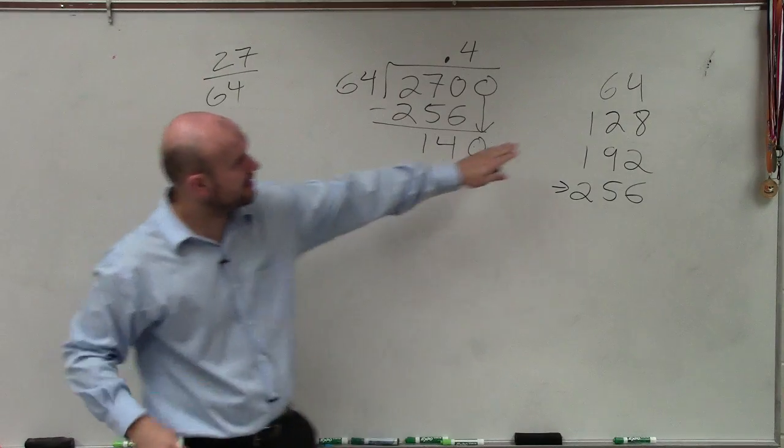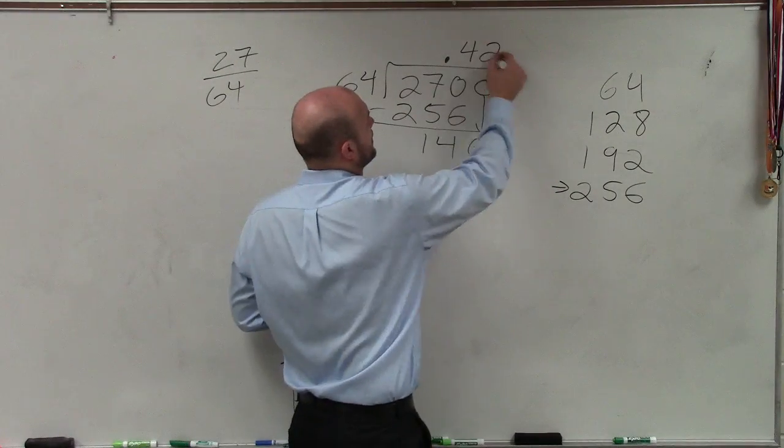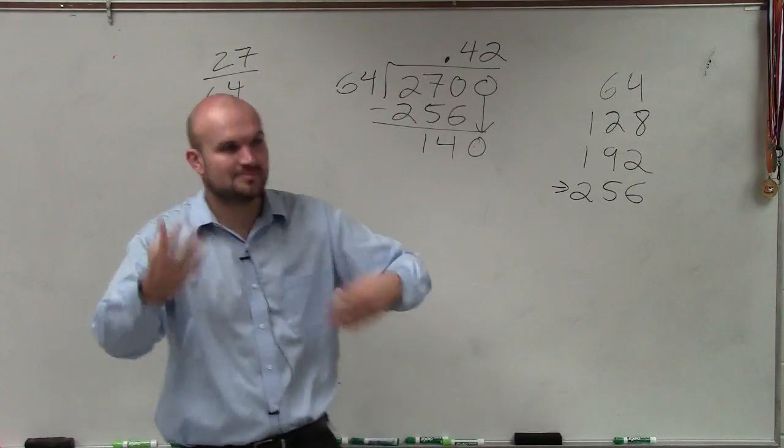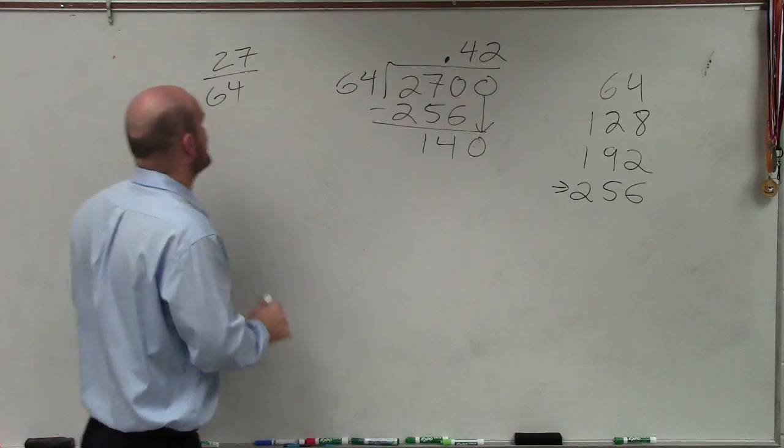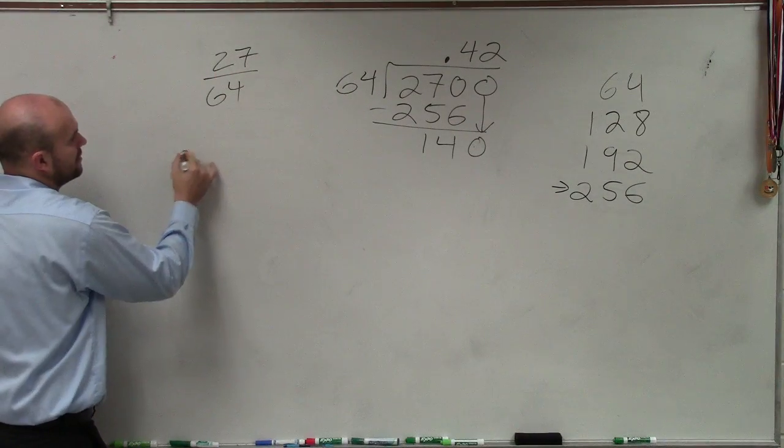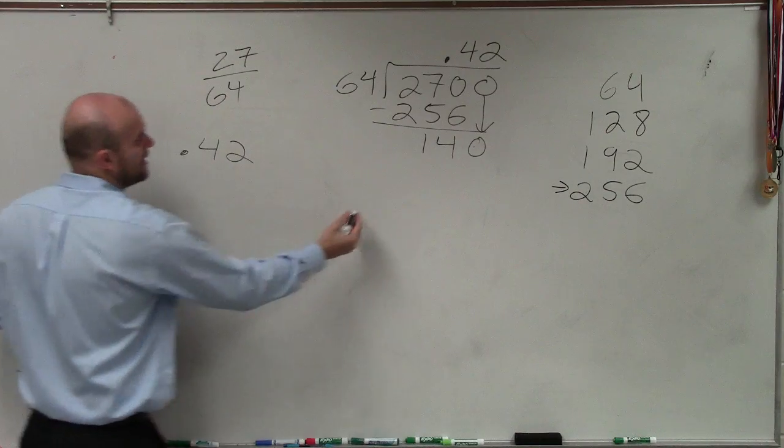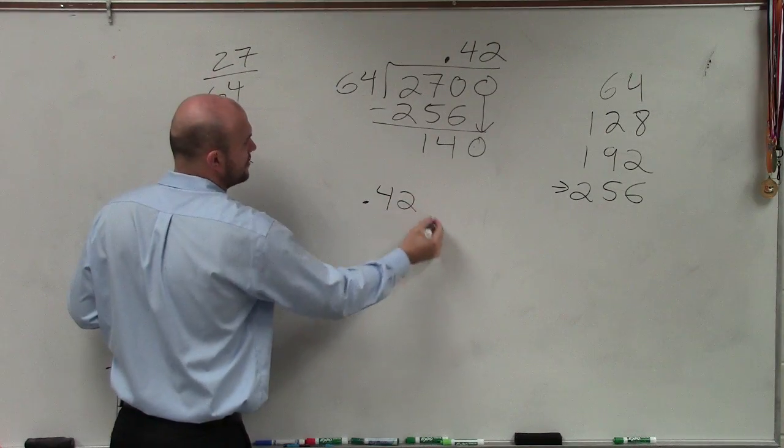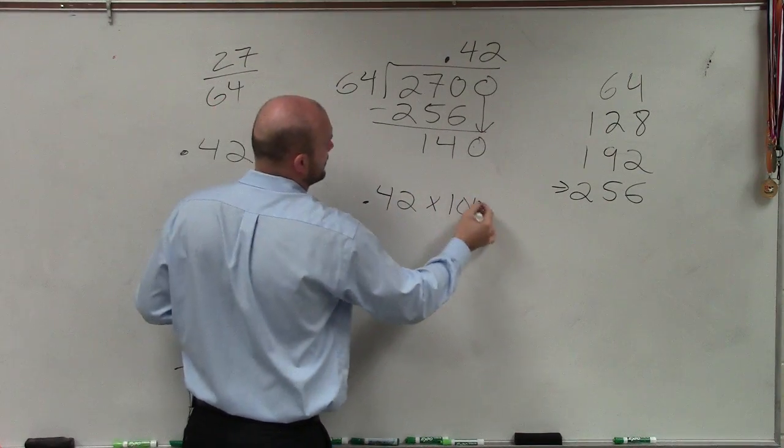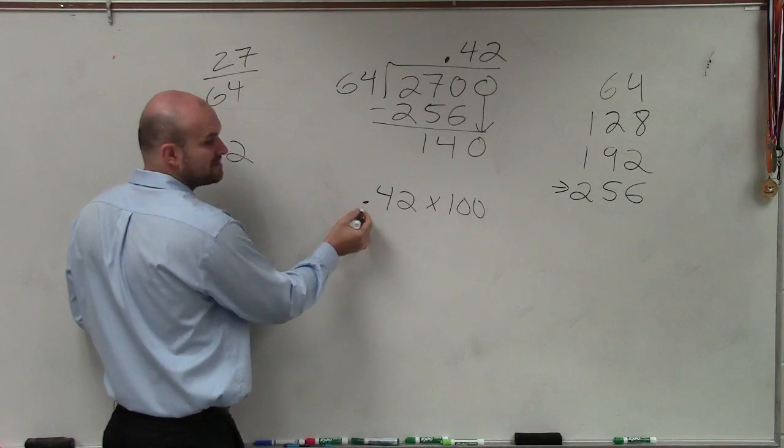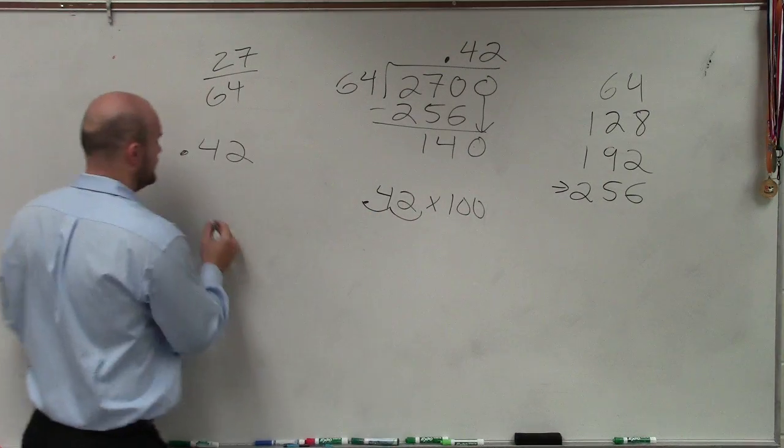And this is going to go into there 2 times. Again, we know we can keep on doing this, but we only need to go to our decimal version. So we have our fraction, our decimal. And then to go to our percent, we just need to multiply by 100, which, as you remember from scientific notation, we're just going to move it over.